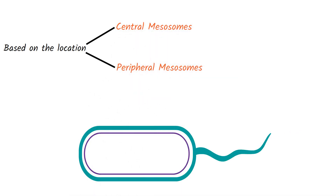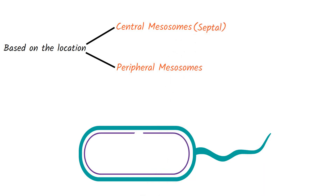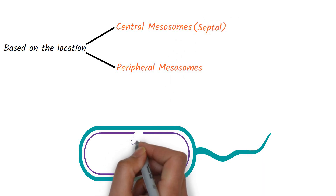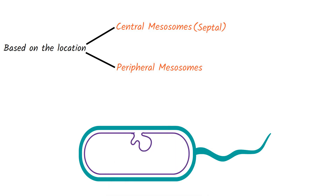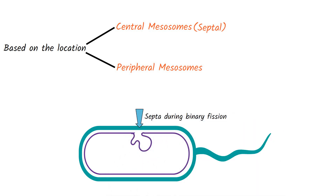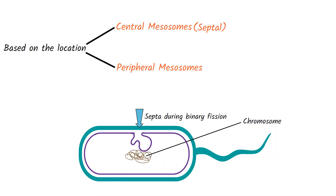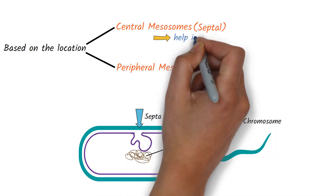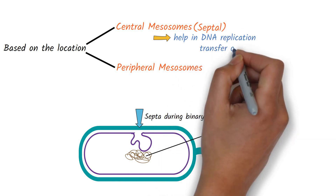The central mesosomes are also called septal mesosomes. As the name suggests, they form in the center of the cell, and as a result, they help in the formation of septa during binary fission. Being closer to the bacterial chromosome, central mesosomes also help in DNA replication and transfer of DNA to the daughter cell.